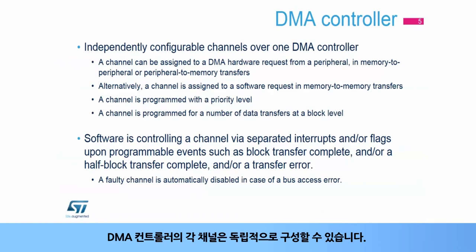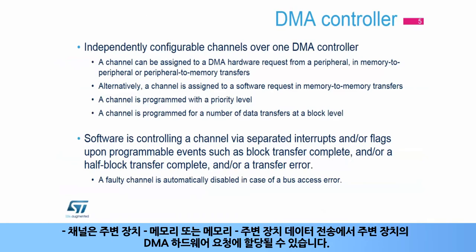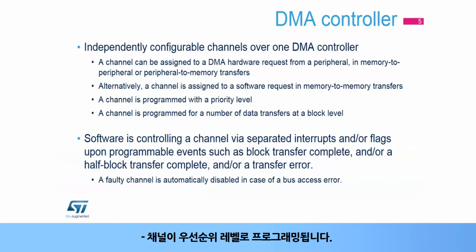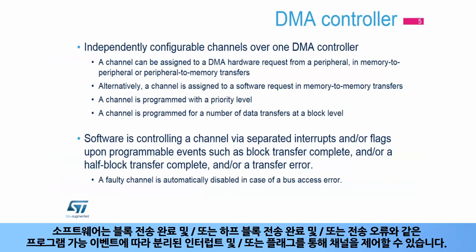Each channel of the DMA controller is independently configurable. A channel can be assigned to a DMA hardware request from a peripheral, in peripheral-to-memory or memory-to-peripheral data transfers. Alternatively, a channel is assigned to a software request in memory-to-memory data transfers. A channel is programmed with a priority level, and a channel is programmed for a number of data transfers at a block level.